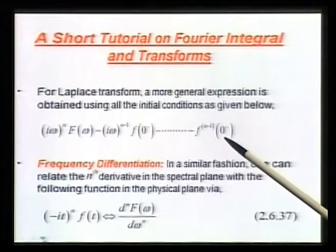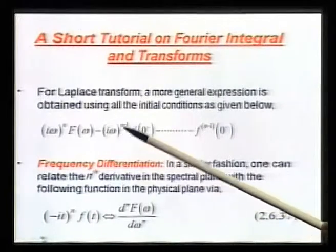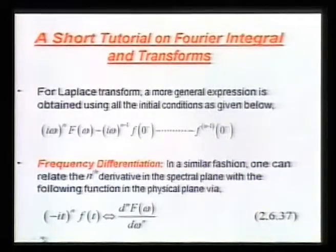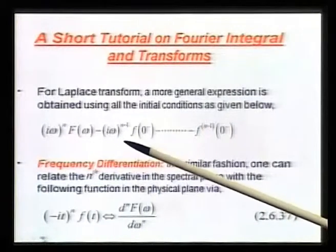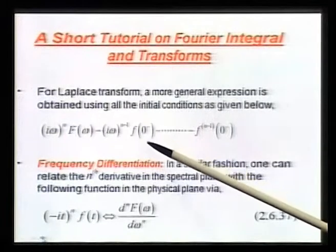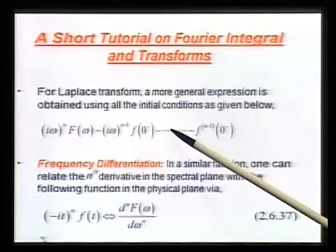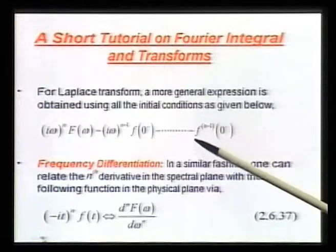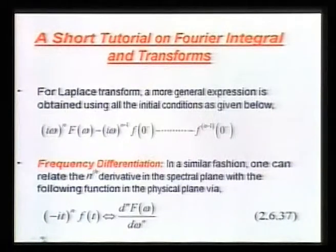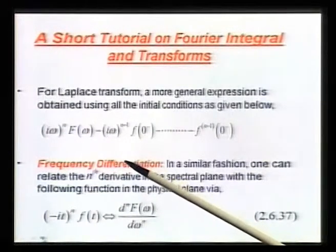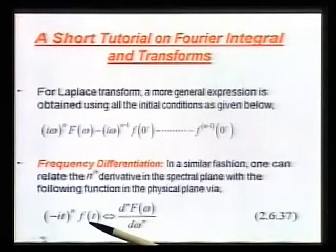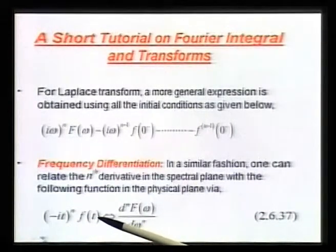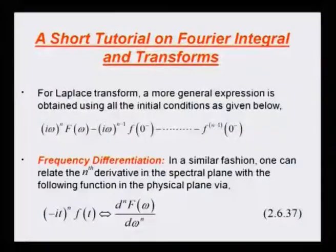For Laplace transform, we need to worry about all kinds of initial conditions. We need to include the function itself at t equal to zero, the first derivative, the second derivative, all the way up to the (n−1)-th derivative evaluated at the origin. There is also the nice property of frequency differentiation: if I take F(omega) and differentiate it n times with respect to omega, the corresponding original is simply f(t) times (−it)^n.